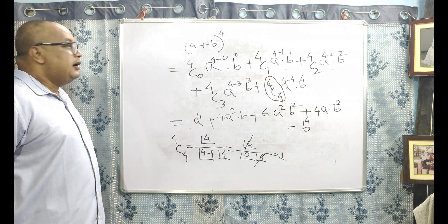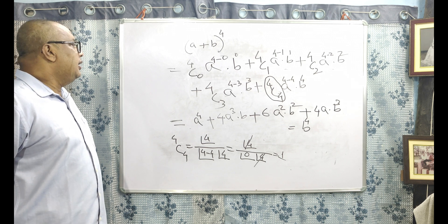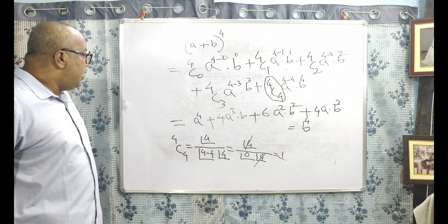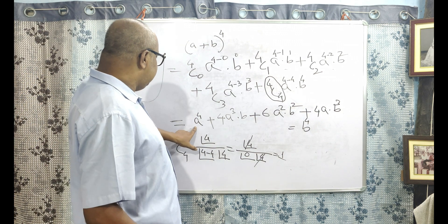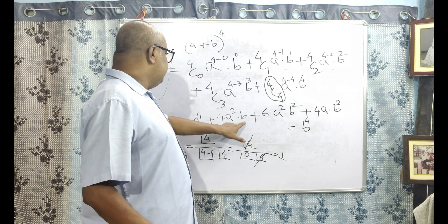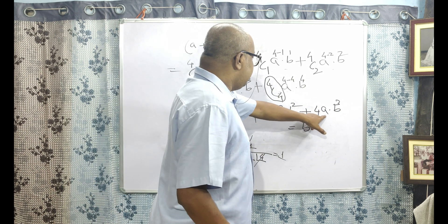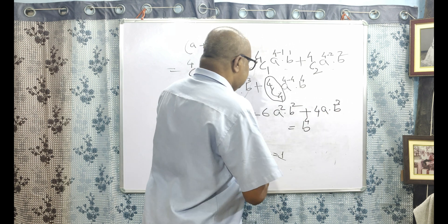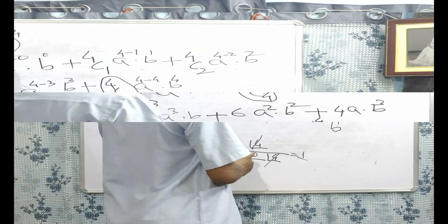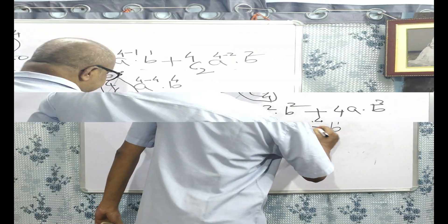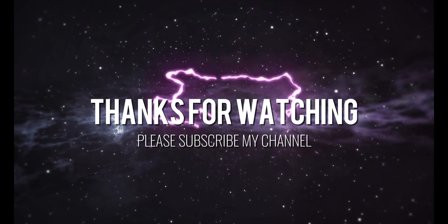If you know the combination formula, then you can derive any equation or formula. So ultimately A plus B to the power 4 is equal to A to the power 4 plus 4A cubed B plus 6A squared B squared plus 4AB cubed plus B to the power 4.